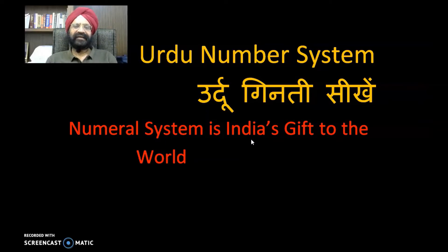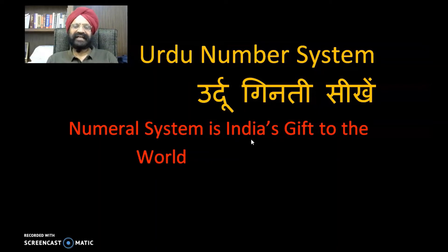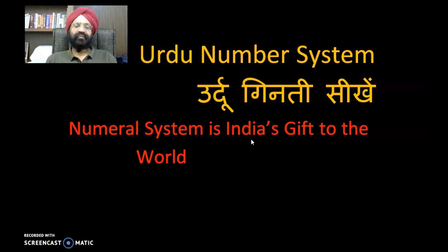I will tell you that our numeral system — the present number system used by the whole world — came originally from India. It traveled to the Middle East, where the numbers 1, 2, 3, 4, 5, 6, 7, 8, 9, and 0 were adopted. The invention of zero was ours. From the Middle East, this number system spread to the Western world and became prevalent globally.